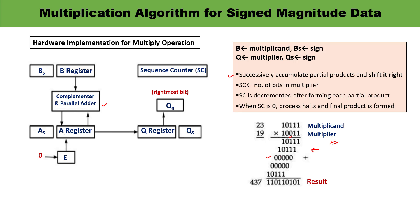You can observe the hardware implementation. This hardware for the multiplication process consists of several registers: register B, register A, and register Q. The multiplier is stored in register Q, along with its sign. This is stored in register Q. The sequence counter SC is initially set to a number equal to the number of bits in the multiplier — here the number of bits is 5, so the sequence counter is set to 5. The sequence counter is decremented by 1 whenever each partial product is formed and the content is shifted. When the sequence counter reaches zero, that is the end of the operation and the product is formed.